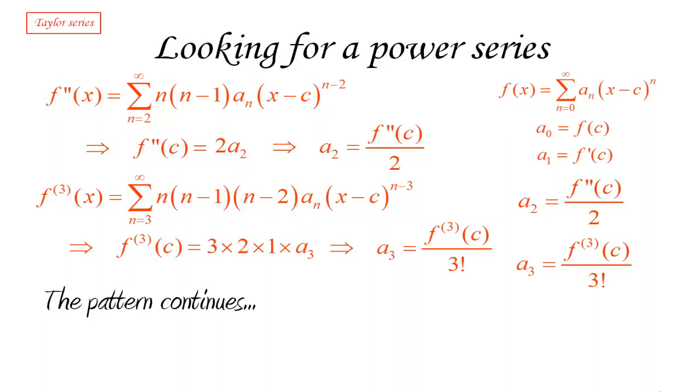And if we put that into the list, notice that the pattern now becomes quite clear. Notice that the first term, the a_0, was the zeroth derivative—well, that's what you may call the function, the zeroth derivative—divided by 0 factorial, which is 1. And then the coefficient a_1 is the first derivative divided by 1 factorial, which is 1. The second coefficient is the second derivative divided by 2 factorial, which is 2. And then going on to 3 and so on. You may want to compute a couple more derivatives to convince yourself that the pattern continues, but in fact it does. And it turns out that the nth coefficient should be the nth derivative of the function at c divided by n factorial.